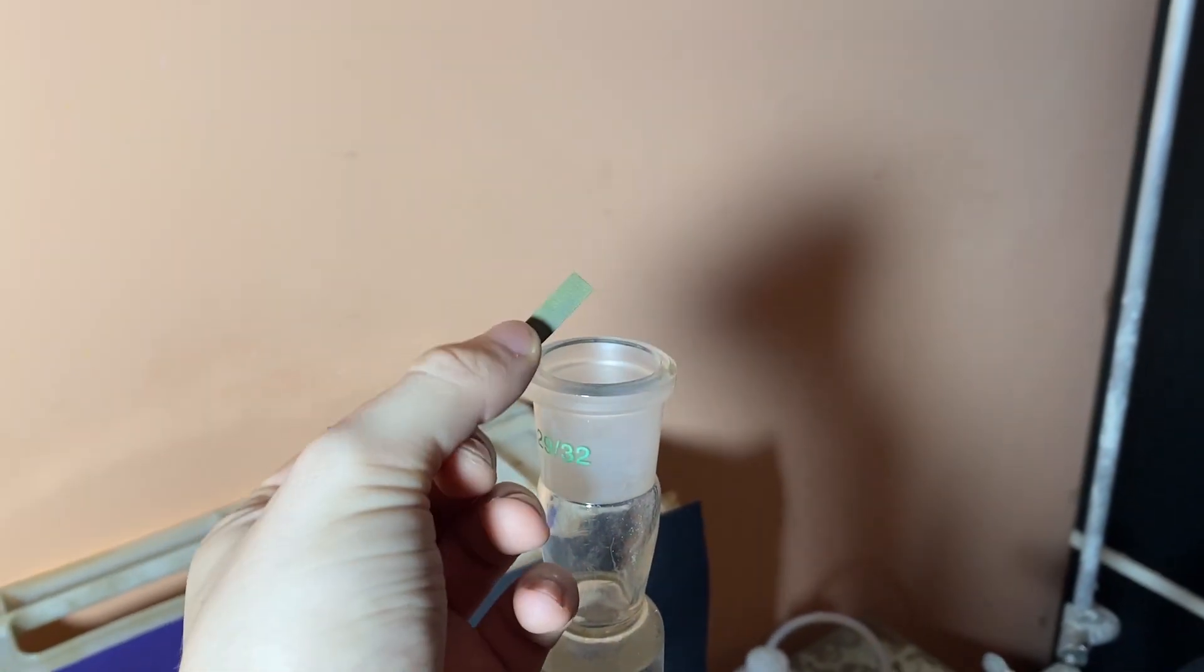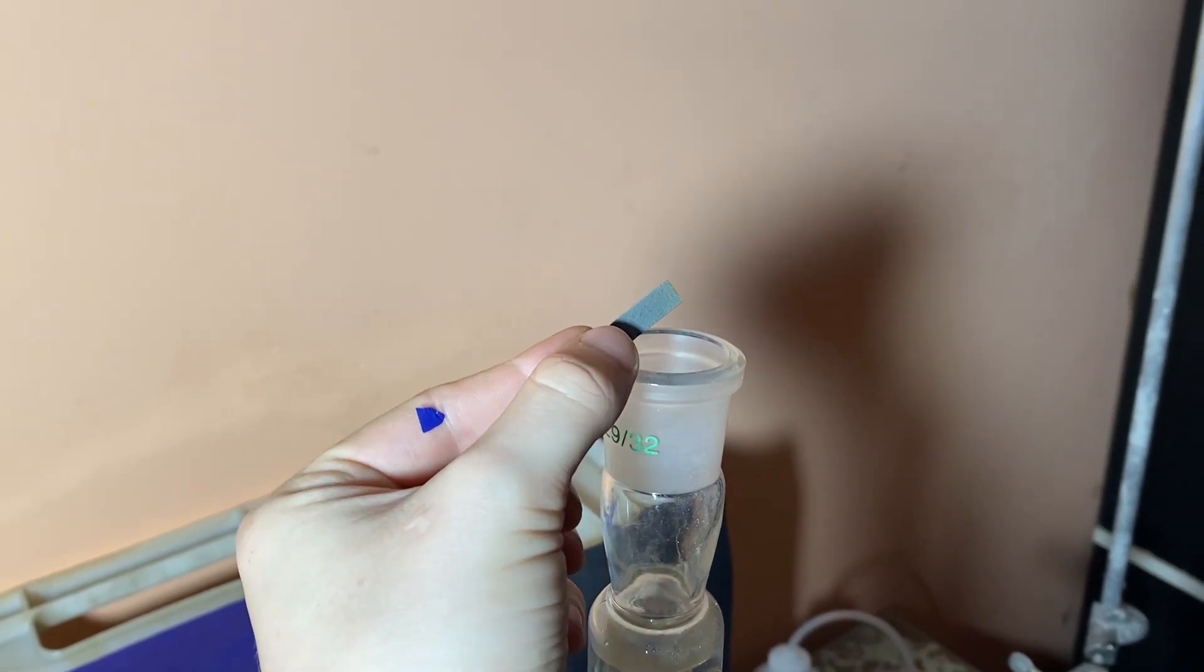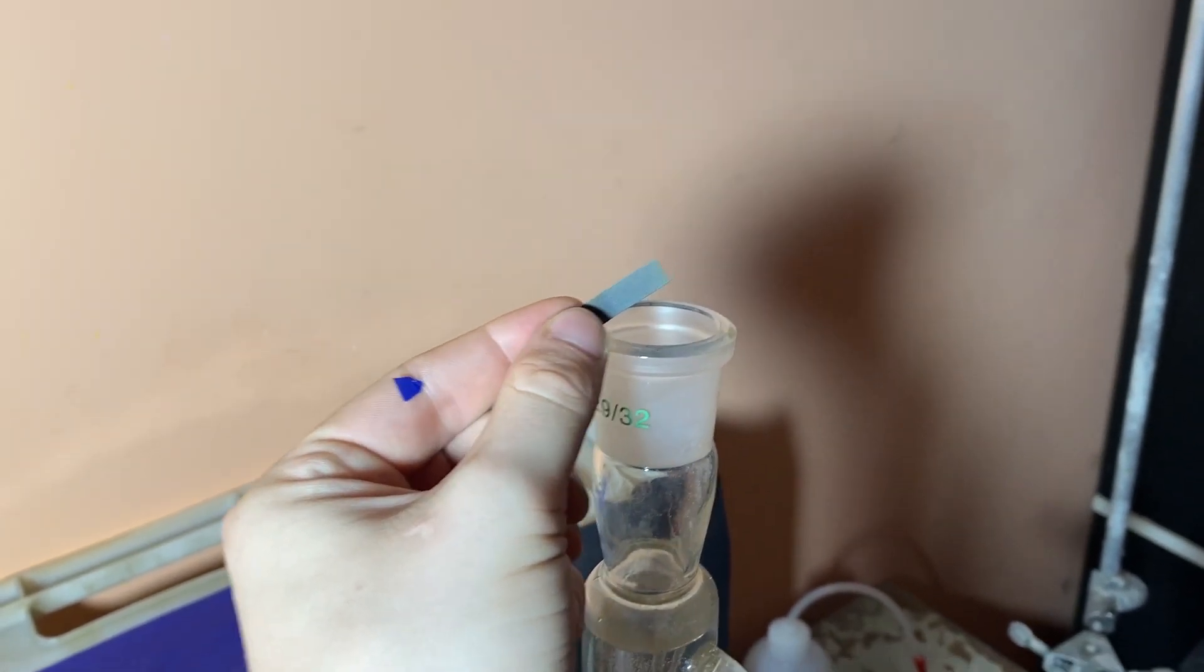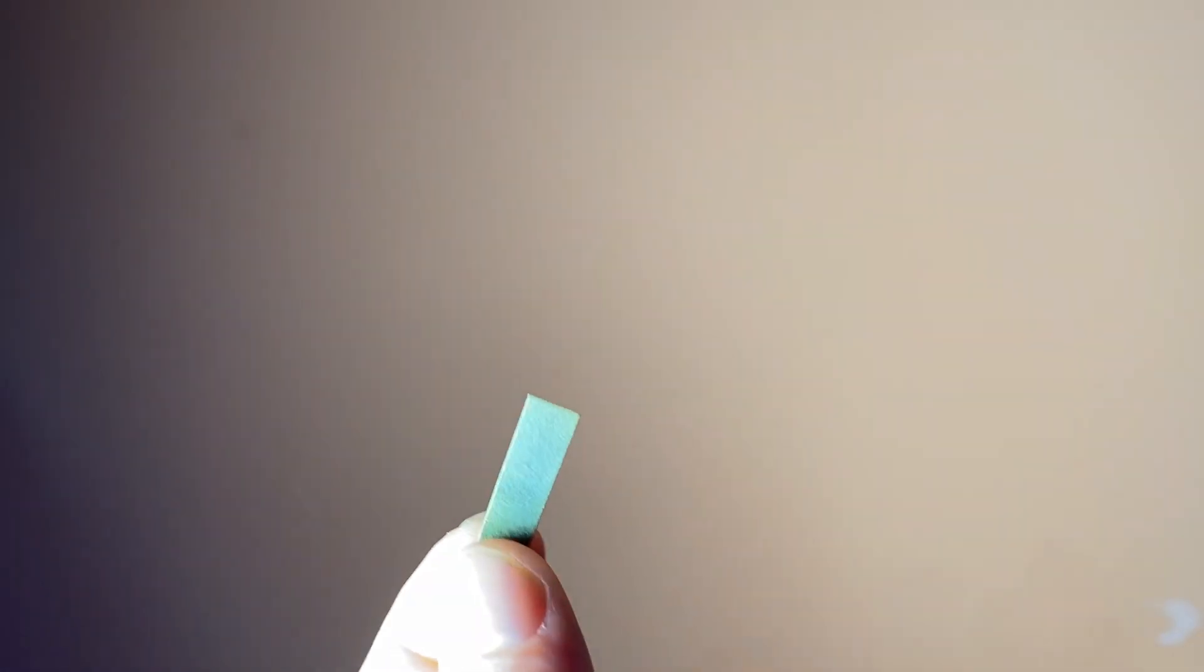To prove the presence of ammonia, I've lowered wet pH paper into the condenser. At first the pH paper starts turning green and then it turns purple, which means the water on the paper absorbed ammonia gas and it turned alkaline.